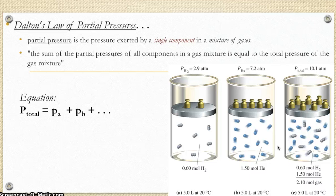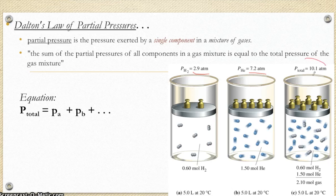And that's what this picture here is trying to show you down in the corner. If I've got 2.9 atmospheres worth of hydrogen and 7.2 atmospheres worth of helium, put them together in the same container, the total pressure is just equal to the sum of the pressures that you put in. So adding and subtracting is as hard as this gets. It just looks complicated.